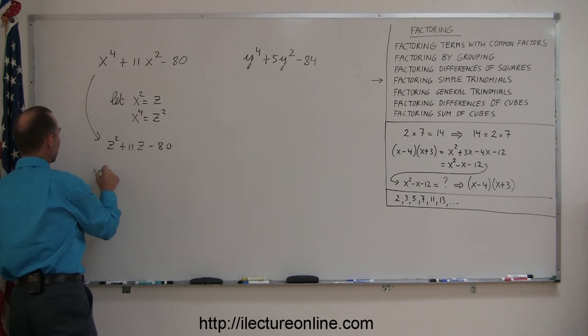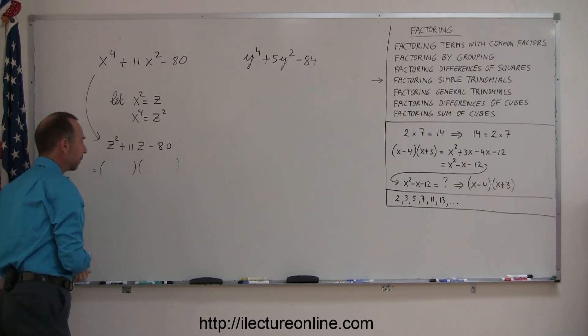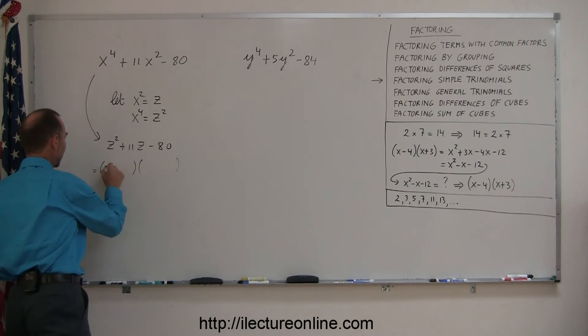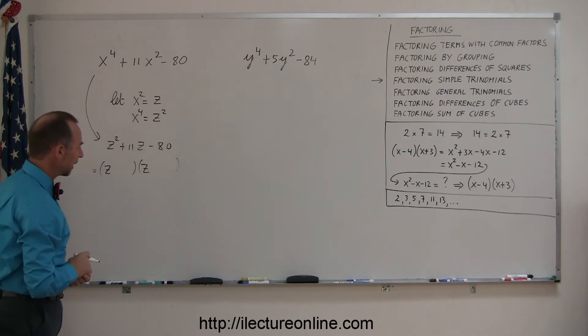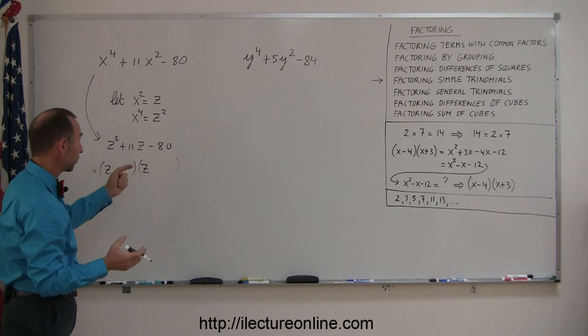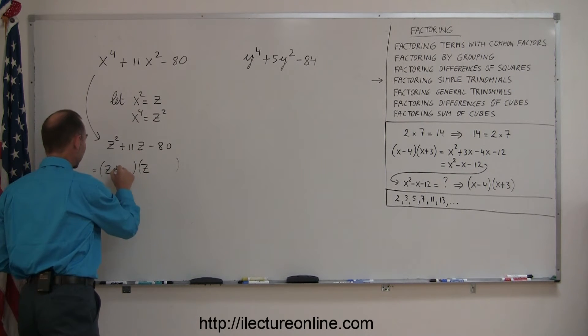So this is now equal to the product of two binomials, and since we have a z squared here we want to write a z and a z. I see a negative 80 there, that means I need a positive and negative, because the only way to get a negative number is to multiply a positive and negative number.